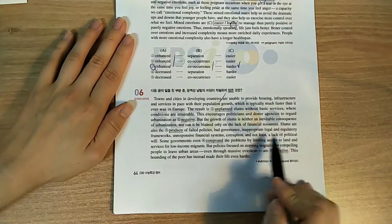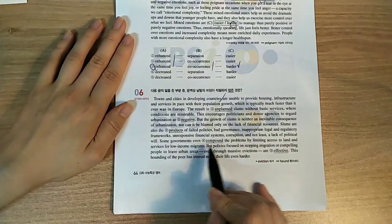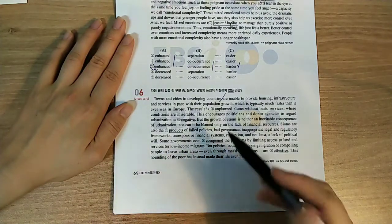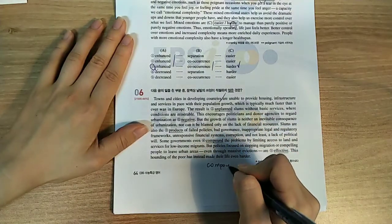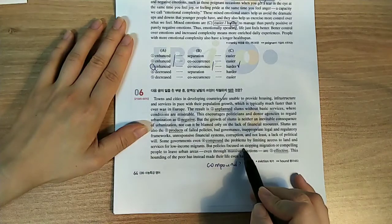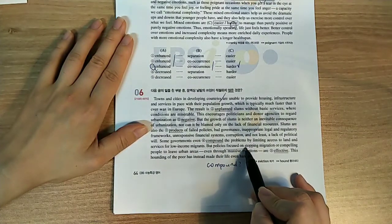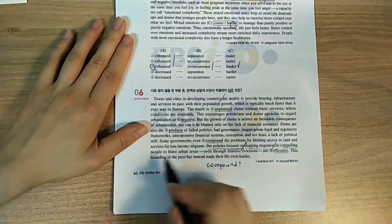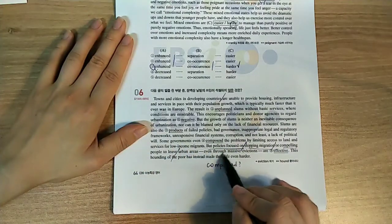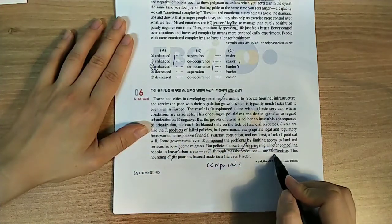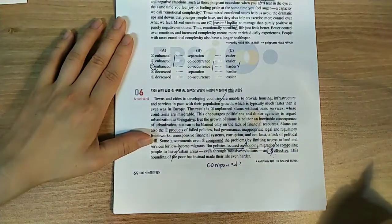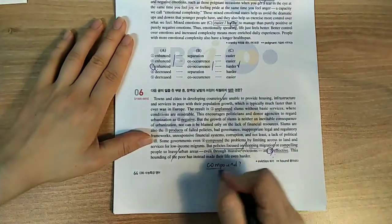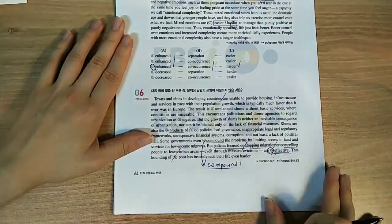A lack of political will. Some governments even compound the problems by limiting access to land and services for low-income migrants. What is compound? But policies focused on stopping immigration or compelling people to leave urban areas, even through massive evictions, are ineffective. This hounding of the poor has instead made their life even harder. Compound는 뭔지 모르겠지만 일단 effective는 아니니까.